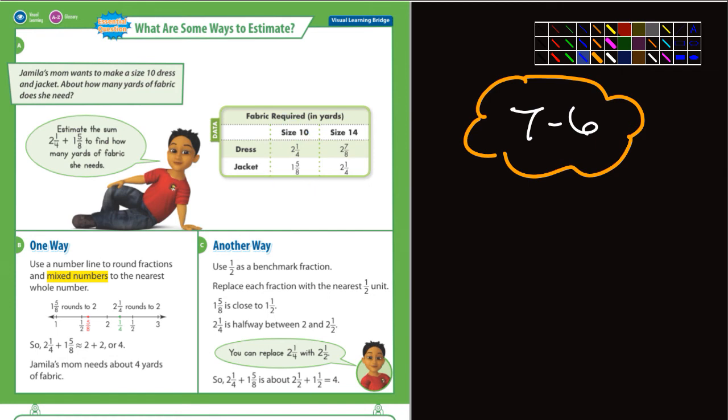And so down here in box B, it says one way: use a number line to round the fractions and mixed numbers to the nearest whole number. And so they determine that she needs about four yards of fabric.